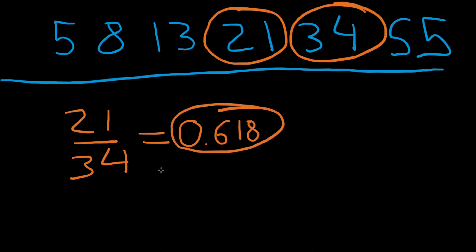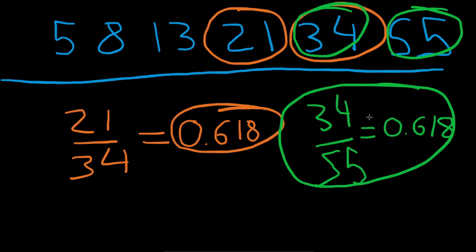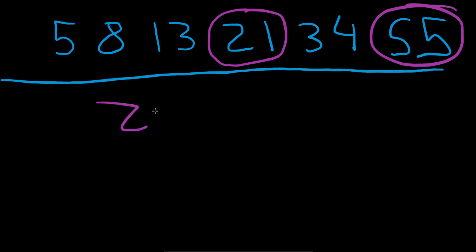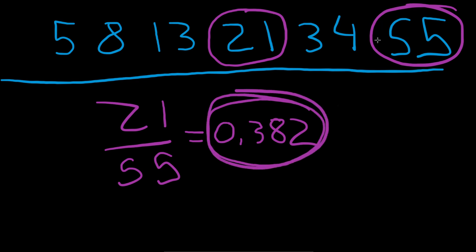That 0.618 sounds familiar, right? Let's do another one. We can take 34 divided by the next number, 55. What happens? Once again we get 0.618. You can take any number in this sequence and divide by the next one, and you will get roughly 0.618. Let's try another thing: take 21 and divide by 55. What ratio do we get? This looks to be around 0.382 — and that one also feels familiar.